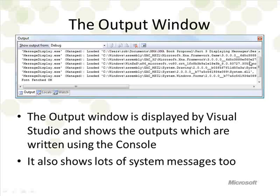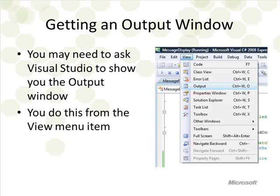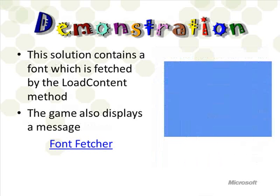If you then look at the Output window from your program, you'll see the message 'font fetched okay'. The stuff at the top is actually building the game — it shows all the bits and pieces as the program is assembled. You can ignore that. The important thing is that my program has told me it just fetched the font. To get the Output window up, go into View and select Output, or hold Ctrl, press W, then press O.